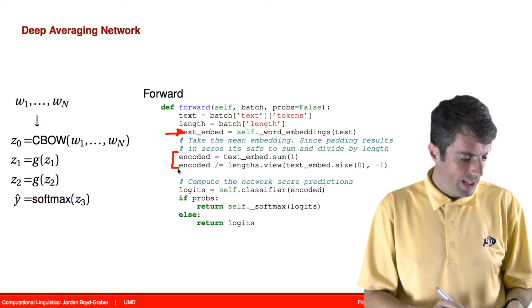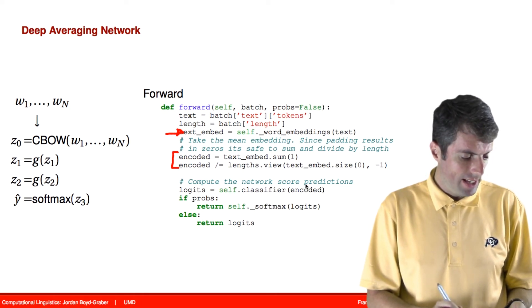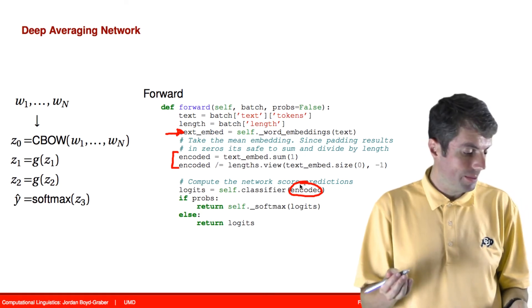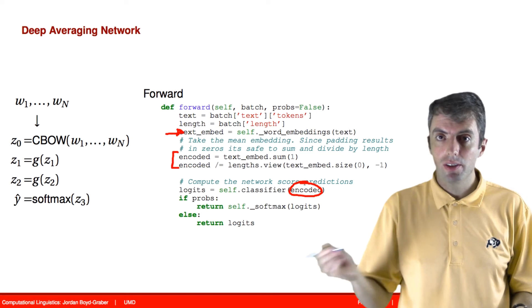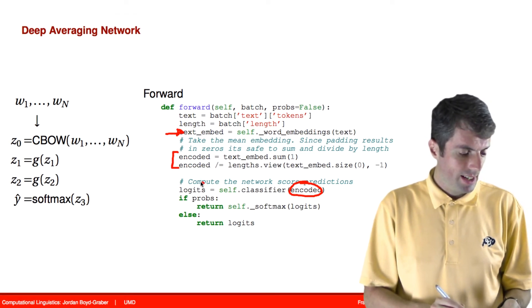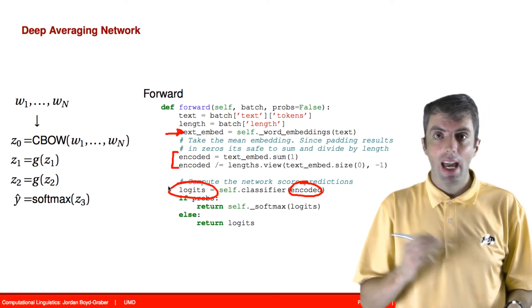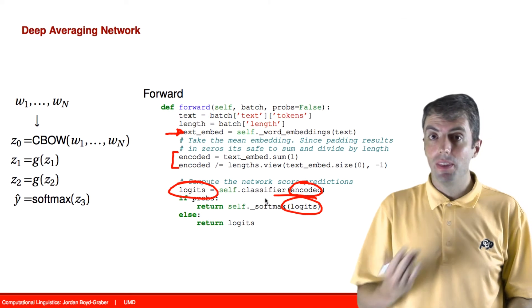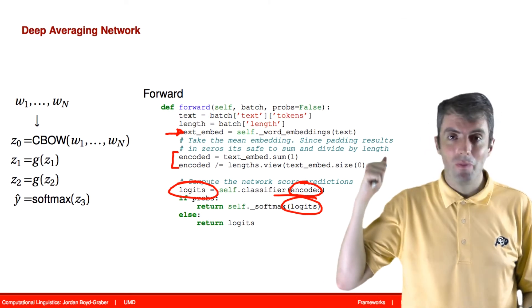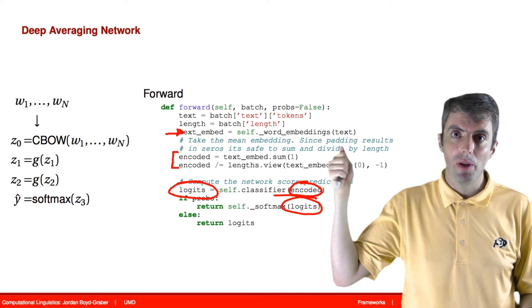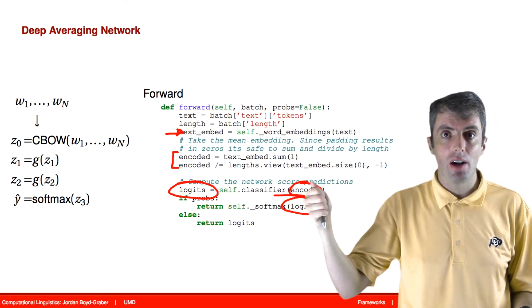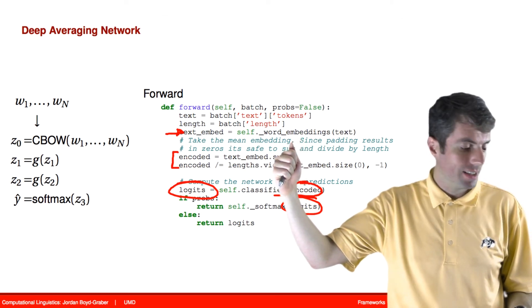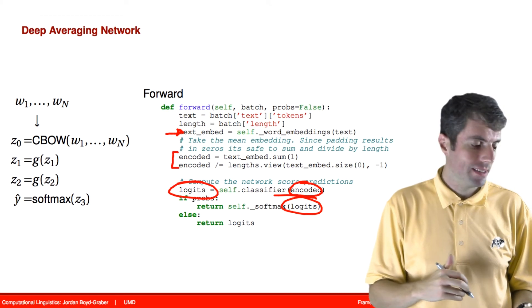Now, what we're going to do is pass that continuous bag of words representation through the classifier that we set up in the constructor for our class. This now gives us the final layer, and that final layer will then go through our softmax function. This is everything that we need. We have a document, represent it as an embedding, pass it through our multiple layers of non-linearity and linear transformations, and then we finally do the softmax classifier at the end.